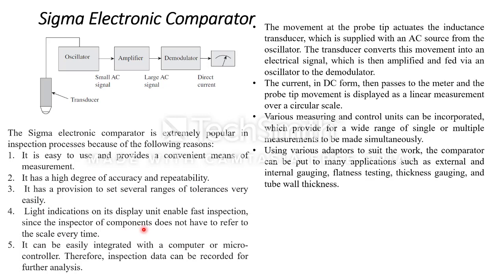Light indication on the display unit enables fast inspection, since the inspector does not have to refer to the scale every time. It can be easily integrated with a computer or microcontroller, so inspection data can be recorded or further analyzed. By connecting this Sigma comparator to a microcontroller, you can do automation. These are the electronic comparator types. In the next class, I will be discussing Unit 4, and before that I will be giving notes on the pneumatic comparators. Thank you.